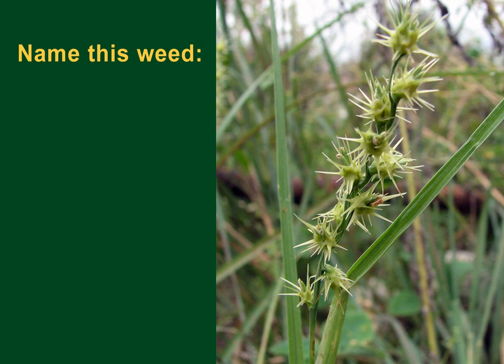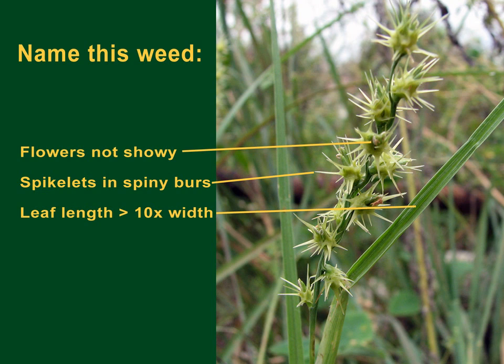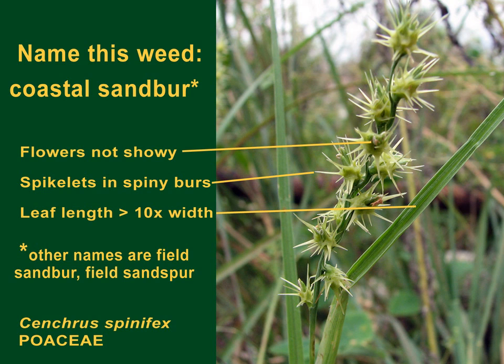Also in the same family, with long linear leaves and parallel veins, is a weed that's not very pleasant to come into contact with. Besides not having showy flowers and having long leaves, its spikelets are arranged in spiny burrs. This weed is coastal sand burr — other names include field sand burr and field sand spur. It is a grass.